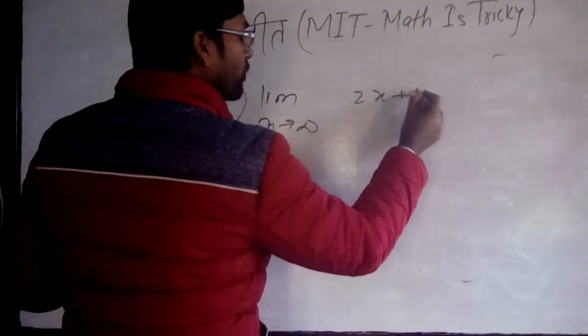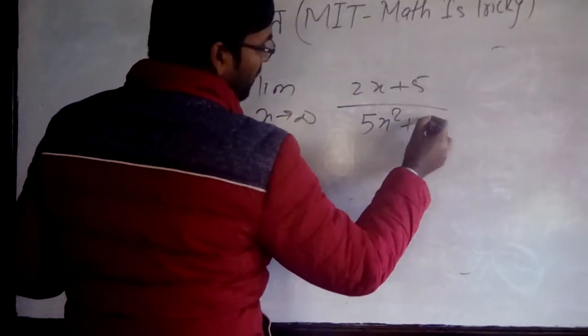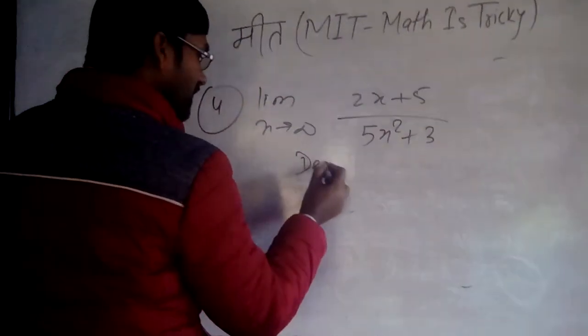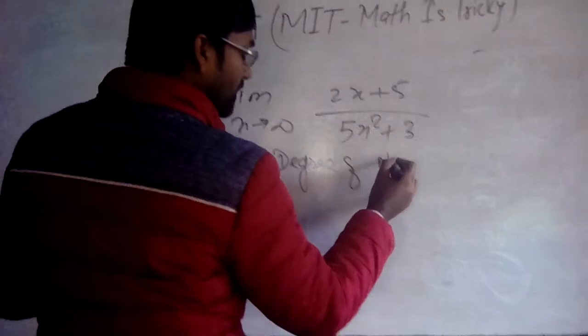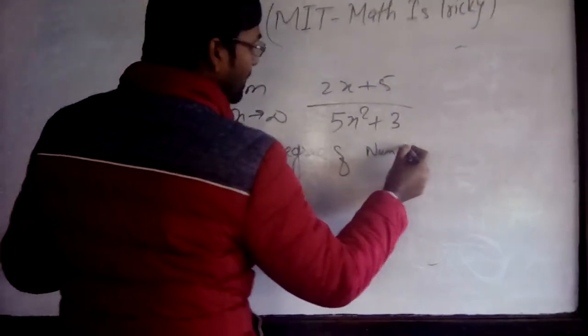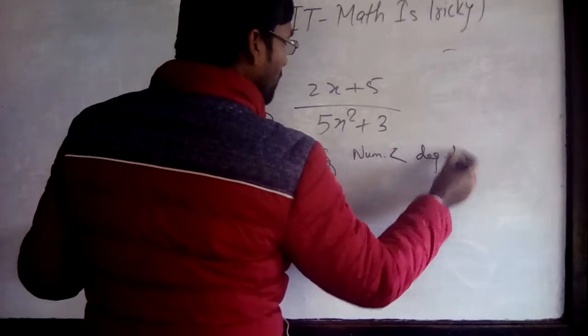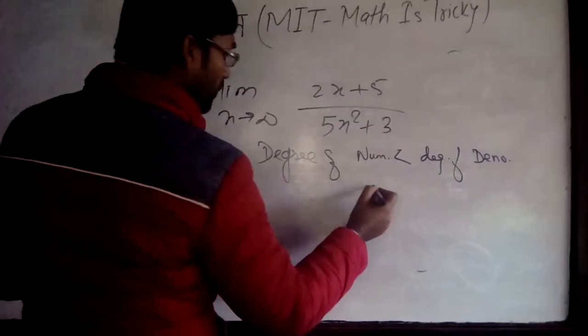In this case, the degree of numerator is less than degree of denominator. So in this case, the answer will always be 0. Always 0.